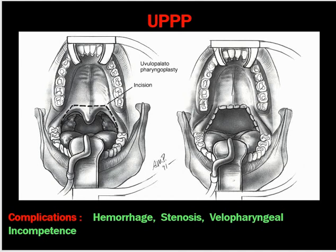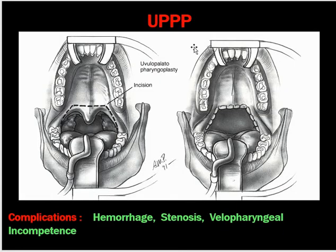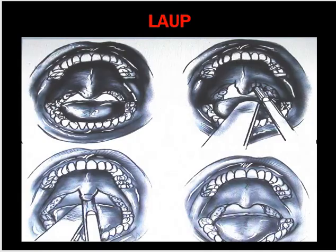Palatal surgeries include uvulopalatopharyngoplasty (UPPP), uvulopalatal flap, lateral pharyngoplasty, and transpalatal advancement pharyngoplasty. UPPP is the most commonly performed procedure, where the uvula and tonsils are removed and posterior pharyngoplasty is performed. Complications include nasopharyngeal stenosis. Laser-assisted uvuloplasty is also performed, where the uvula is trimmed short by laser surgery.